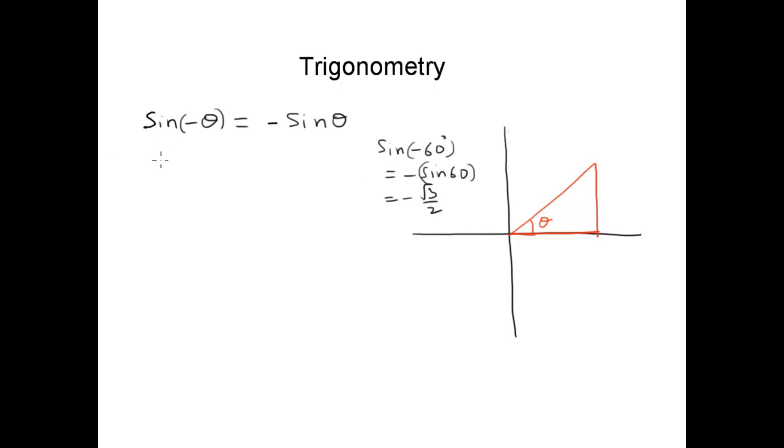And next would be cos. Cosine of minus theta is plus cosine theta. You see, for sine, minus theta is minus sine theta. For cosine, it's positive. It doesn't matter if you're negative angle or positive angle, it's still positive.